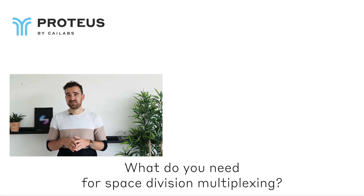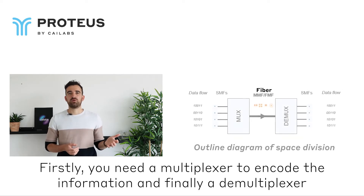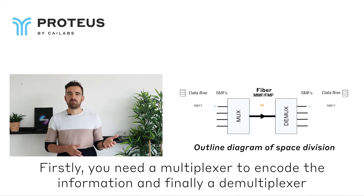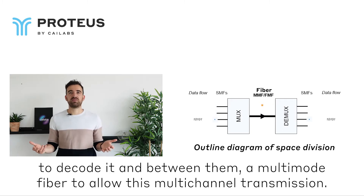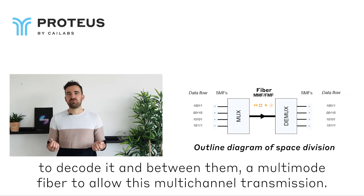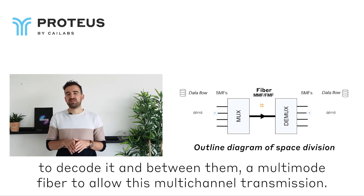What do you need for space division multiplexing? Firstly, you need a multiplexer to encode the information, and finally, a demultiplexer to decode it, and between them, a multimode fiber to allow this multichannel transmission.